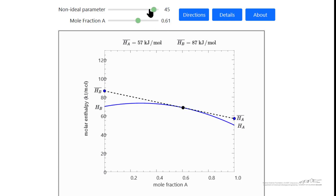Now the simulation also allows negative deviations, in which case you'll notice that the partial molar quantities are smaller than the molar quantities for each of the components, and again shows the same behavior otherwise.